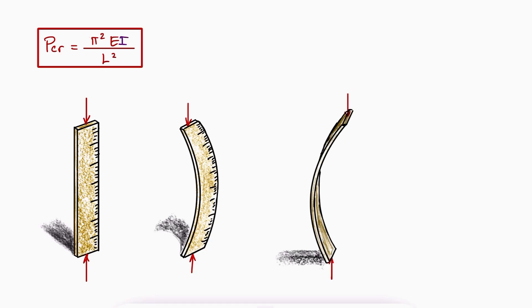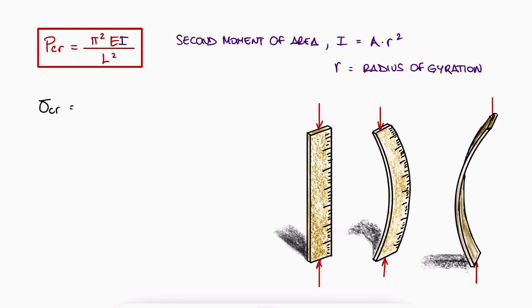Since we can write this second moment of area as the area times r squared, where r is the radius of gyration, the critical stress, which is P_cr over area, would be pi squared E over (L over r) squared. The L over r fraction is what we call the slenderness ratio of the column.